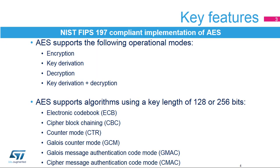The AES Accelerator supports four operation modes: encryption, key derivation, decryption, and key derivation plus decryption. It processes 128-bit data blocks using an encryption key that is either 128 or 256 bits long, based on the selected chaining mode as shown on the next slide.